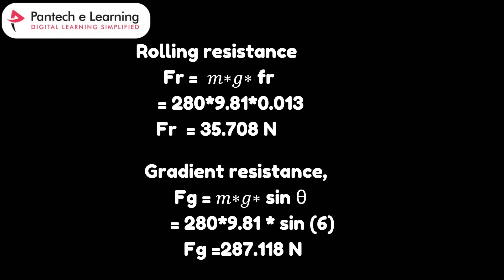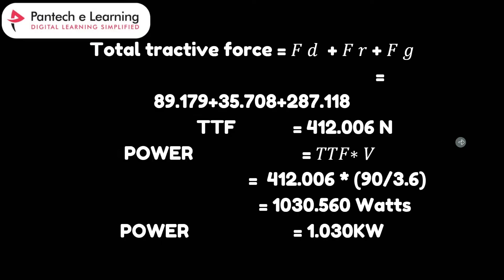These calculations help us understand the forces acting on the vehicle and determine its performance characteristics under different conditions such as speed, terrain, or aerodynamic factors. The total tractive force is the sum of aerodynamic, rolling resistance, and gradient forces. The total tractive force comes out to 412.006 Newtons.